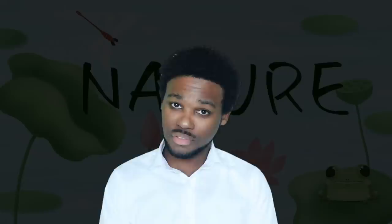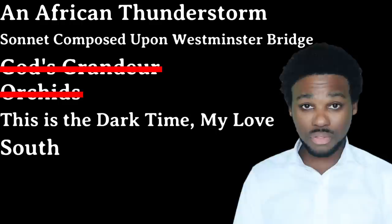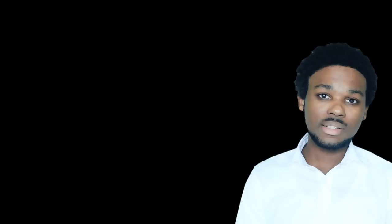Nature is one of those themes that you can find in many of the poems. I list the poems that explore this theme in a significant way, and then I'll very briefly discuss how the theme of nature is explored in each poem. This is how I proceed with all 20 themes. The poems for nature are: An African Thunderstorm, Sonnet Composed Upon Westminster Bridge, God's Grandeur, Orchids, This is the Dark Time My Love, South, A Lesson for This Sunday, and Landscape Painter Jamaica.